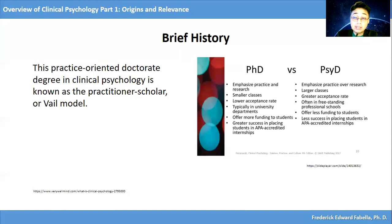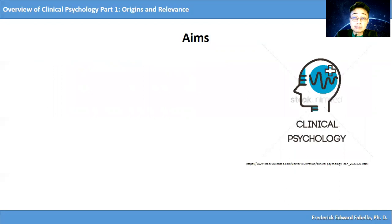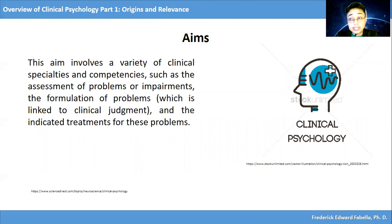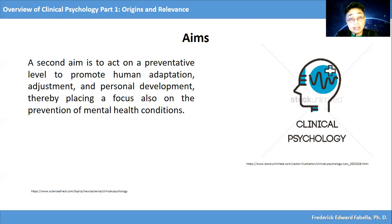Let's consider the aims of clinical psychology. The aim of clinical psychology is to understand, predict, and treat or alleviate disorders, disabilities, or any kind of maladjustment. This aim involves a variety of clinical specialties and competencies such as the assessment of problems or impairments, the formulation of problems which is linked to clinical judgment, and the indicated treatments for these problems. A second aim is to act on a preventative level to promote human adaptation, adjustment, and personal development, thereby placing a focus also on the prevention of mental health conditions.